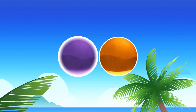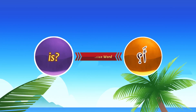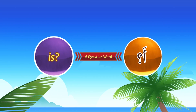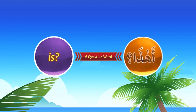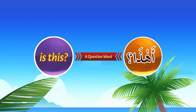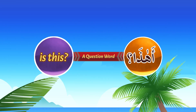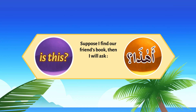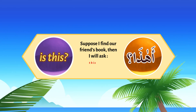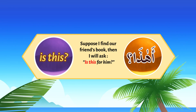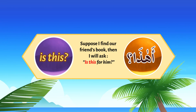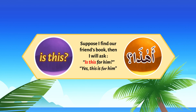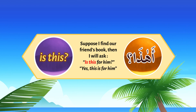أَ is a question word. For example, if I say أَهَذَا, it means 'is this...?' and so on. Suppose I find our friend's book — I will ask: 'Is this for him?' — أَهَذَا لَهُ? And you will say: نَعَم، أَهَذَا لَهُ — 'Yes, this is for him.'